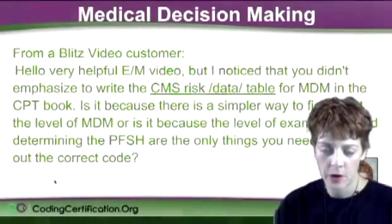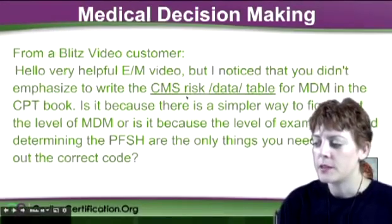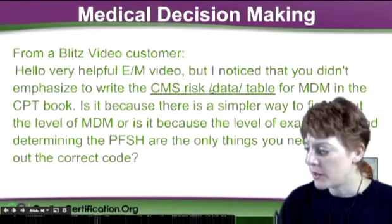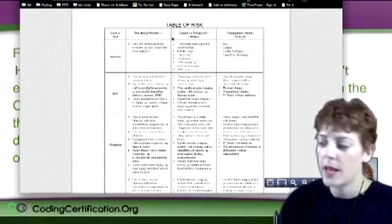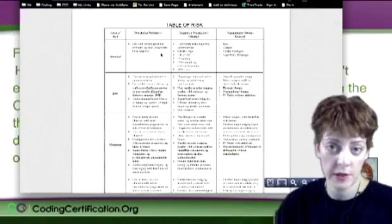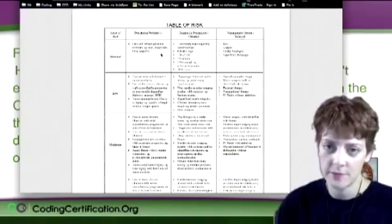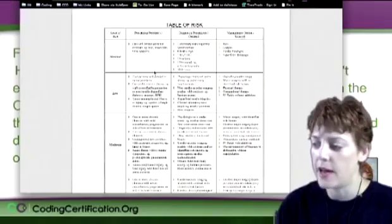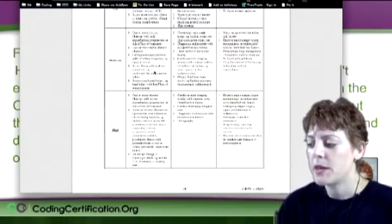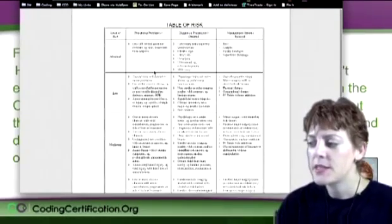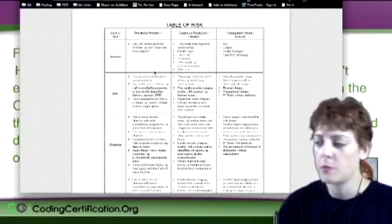E&M coding has evolved on the board exam. The CMS risk — I put a hyperlink here to show you what that looks like. This is the table of risk, and if you want to write that in your manual, go ahead. You can write anything you want in your manual. You cannot print this and tape it — that is not allowed. The reason why I don't recommend it is because there is a table that I believe they will use more on the board exam.